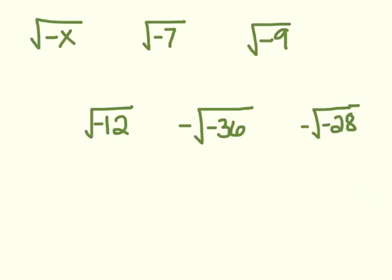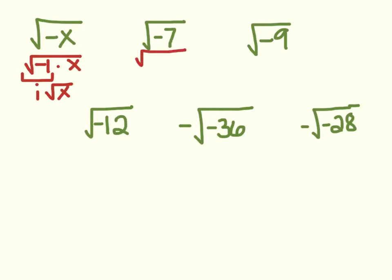Here are some quick example problems. If I asked you for the square root of negative x, you would break that up into the square root of negative 1 times x. We know the square root of negative 1 is i, so this would be i root x. If I had the square root of negative 7, the square root of negative 7 is the same thing as the square root of negative 1 times 7, so that would be i times the square root of 7, or i root 7.